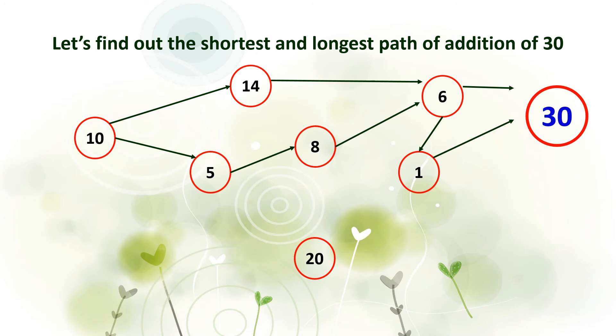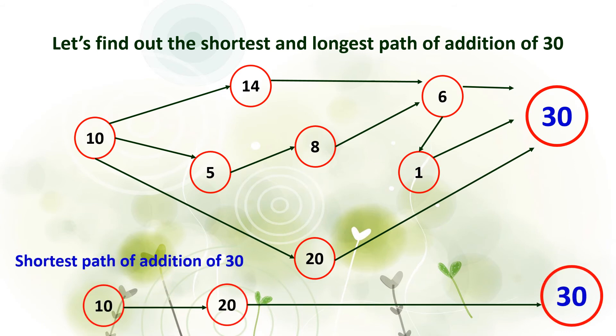The shortest path of addition of 30 is 10 plus 20 equals 30.